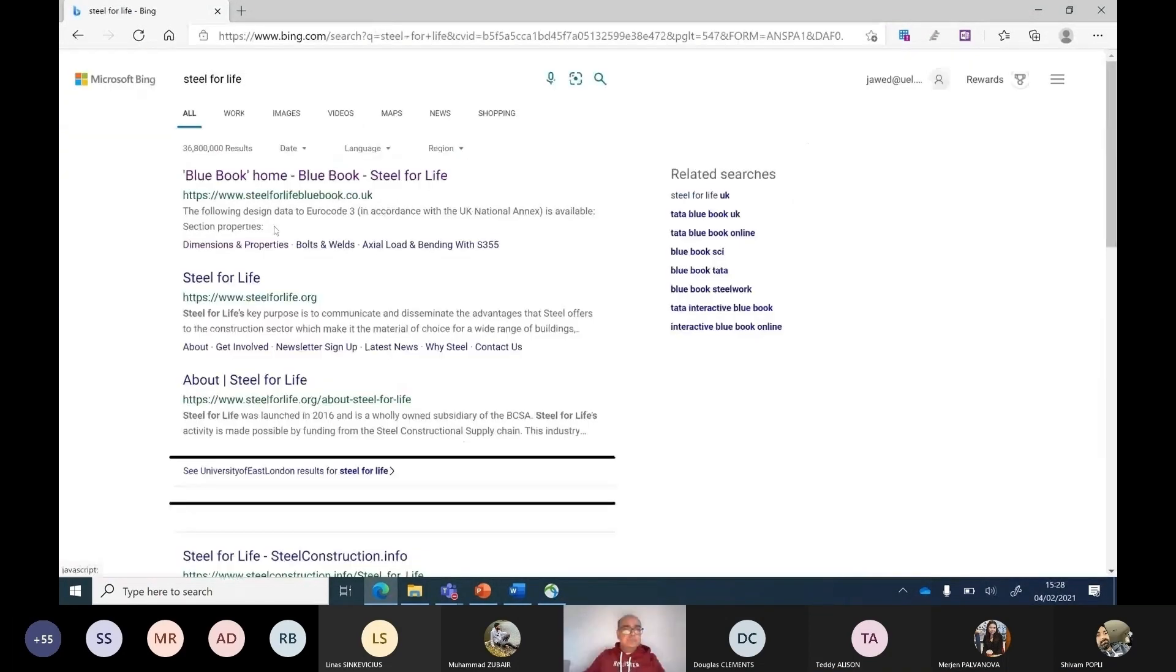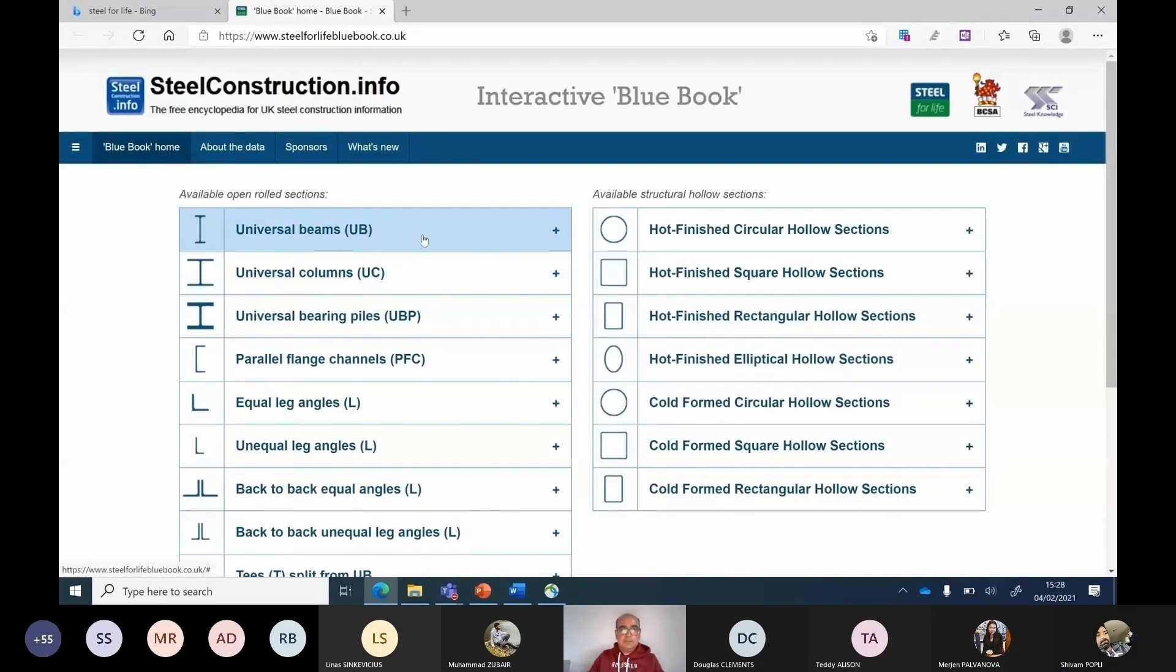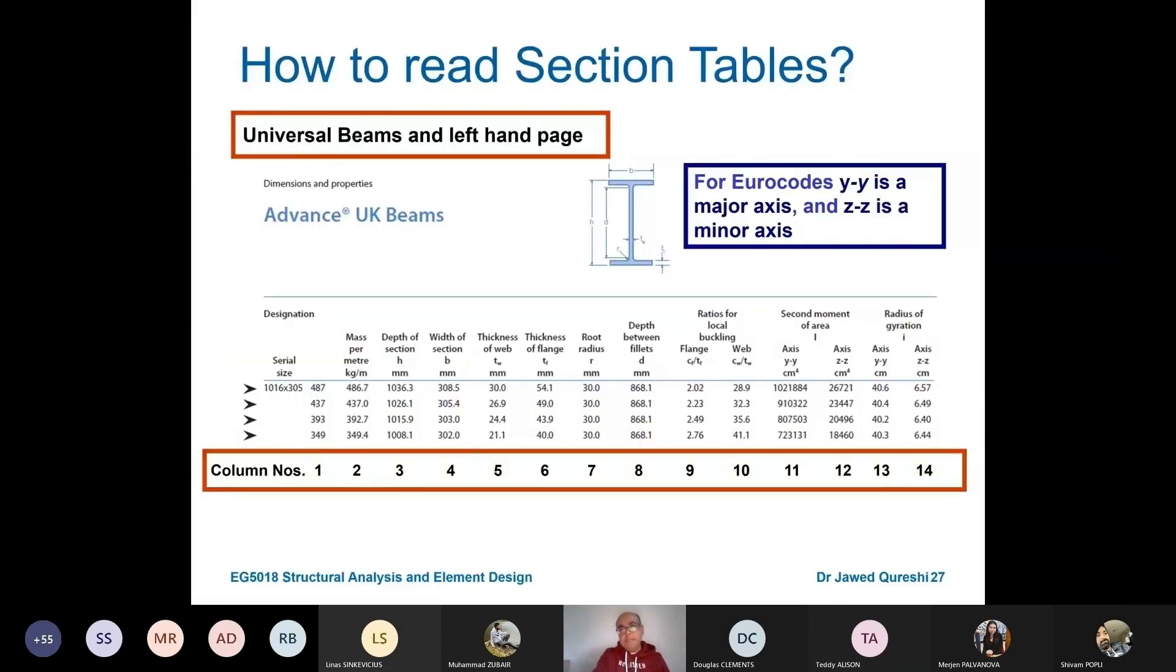This interactive blue book will come up. Now you can have a look at properties of universal beams. You can see all these properties over here. In Eurocode, we have YY as major axis and ZZ as minor axis.